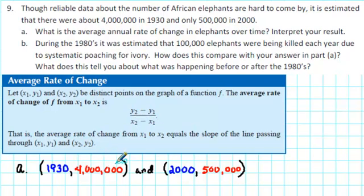In essence, if you have two ordered pairs, you just find the slope between those two points. So, since there were 4 million elephants in 1930, that means we have one ordered pair: (1930, 4 million). And then there were only 500,000 in 2000. That means we have another ordered pair: (2000, 500,000).